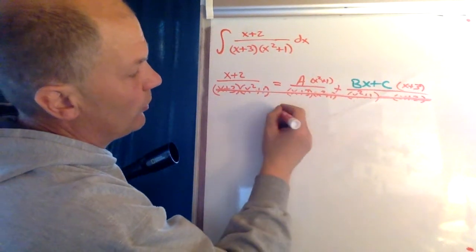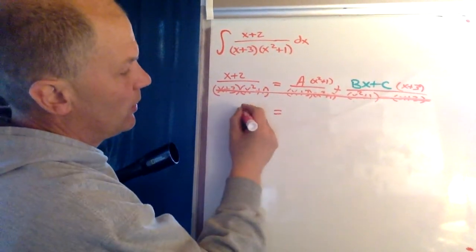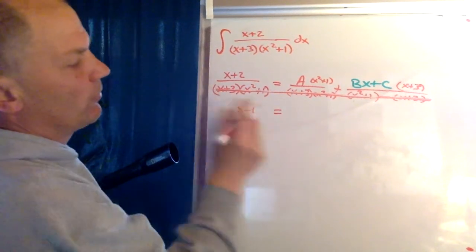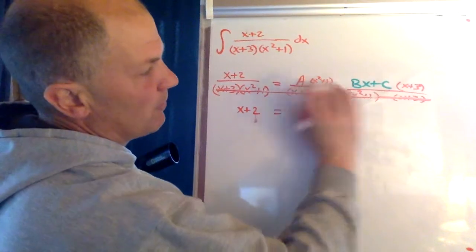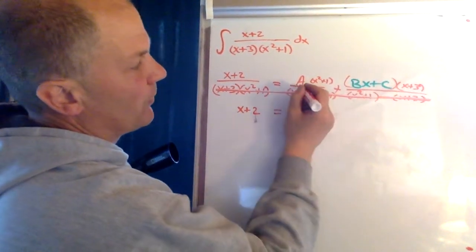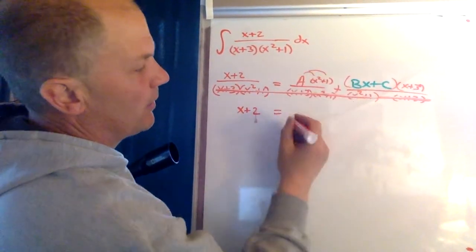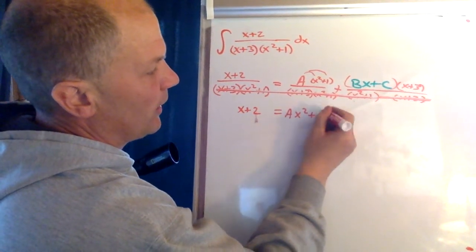Now my job is to start simplifying. So this first term just comes down. Now I need to multiply these terms out. So I'm gonna distribute the a and I get ax squared plus a.